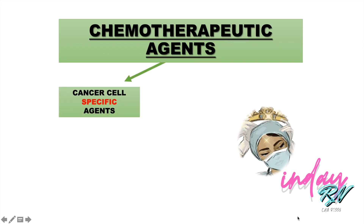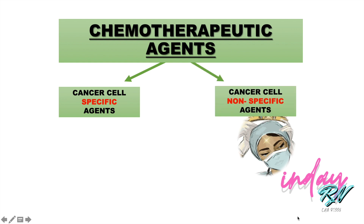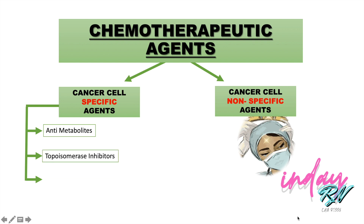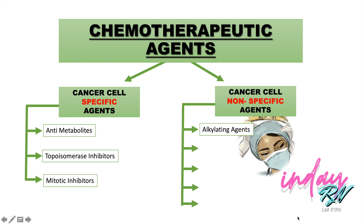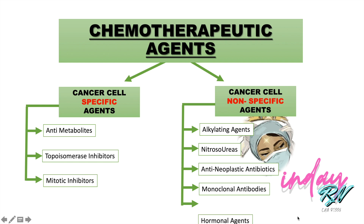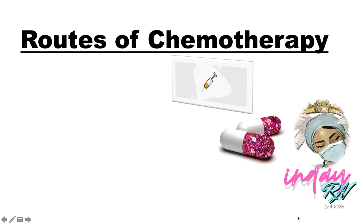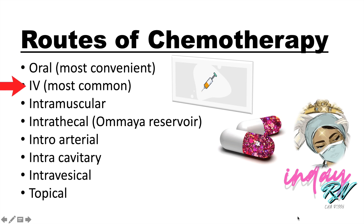To summarize: chemotherapy agents are classified into cancer cell-specific agents — anti-metabolites, topoisomerase inhibitors, and mitotic inhibitors — and cancer cell non-specific agents — alkylating agents, nitrosoureas, antineoplastic antibiotics, monoclonal antibodies, and hormonal agents. Understanding the cell cycle division is essential to understand how these agents work. There are different routes for giving chemotherapeutic agents: oral, IV, intramuscular, intrathecal, intra-arterial, intracavitary, intravesical, and topical.